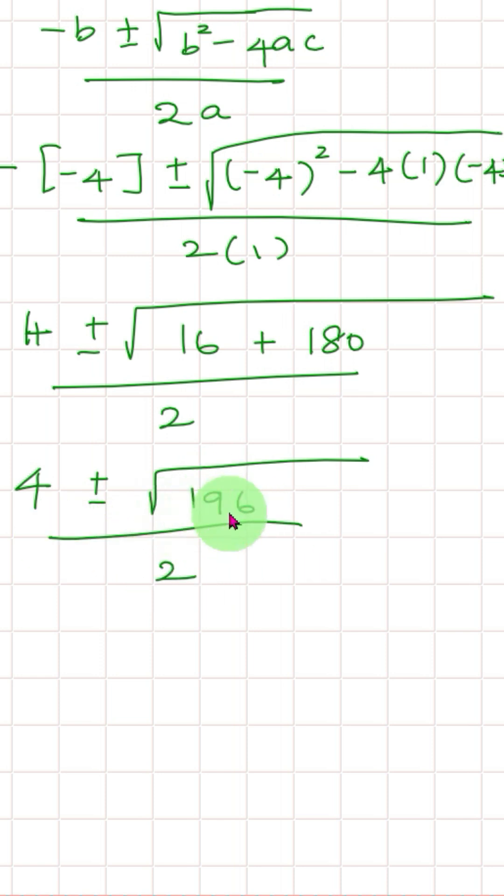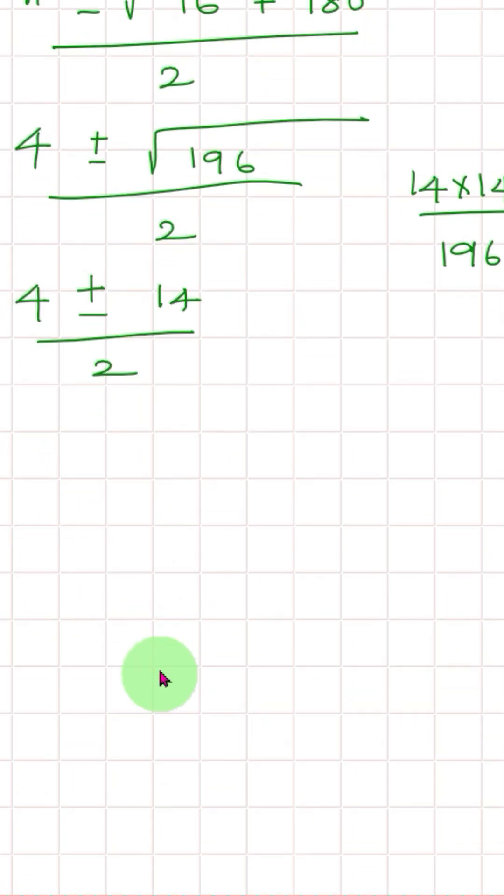Square root of 196 divided by 2, square root of 196 is 14. So 4 plus or minus 14 by 2. Which is 4 plus 14, that's 18 divided by 2. So 4 minus 14 divided by minus 10. Minus 10 divided by 2 is negative 5, 9.